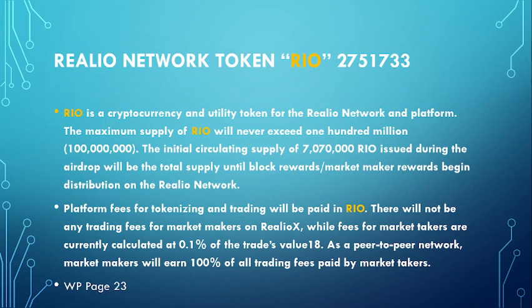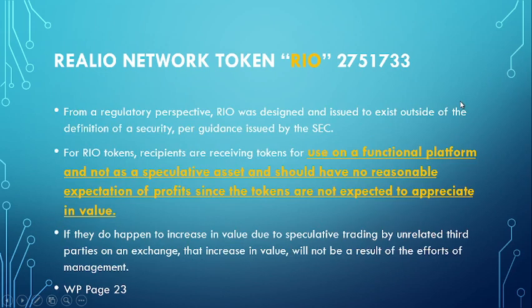Moving on to RIO: RIO is the cryptocurrency and utility token for the Realio network and platform — that is the main differentiator. The main supply of RIO will never exceed 100 million. The initial circulating supply of 70 million RIO issued during the airdrop will be the total supply until block rewards and market maker rewards begin distribution. Platform fees for tokenizing and trading will be paid in RIO. Market makers on Realio X will earn 100% of all trading fees, currently calculated at 0.1% of trade value, per page 23 of the white paper.